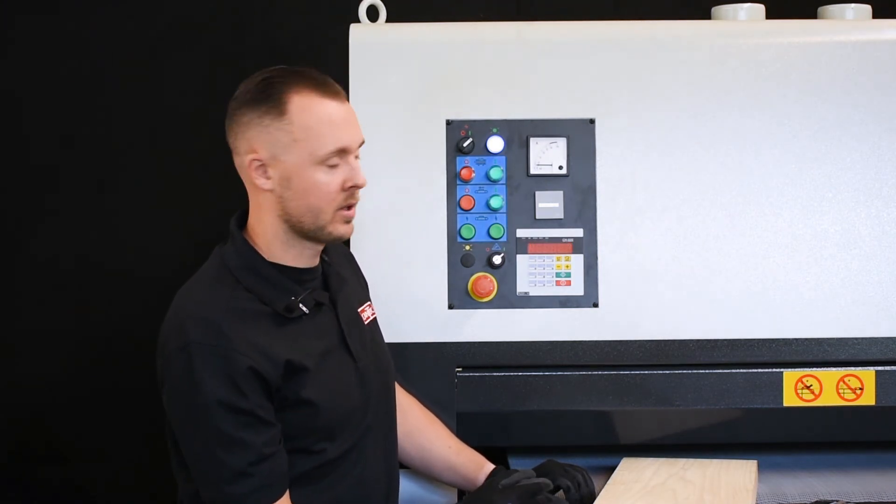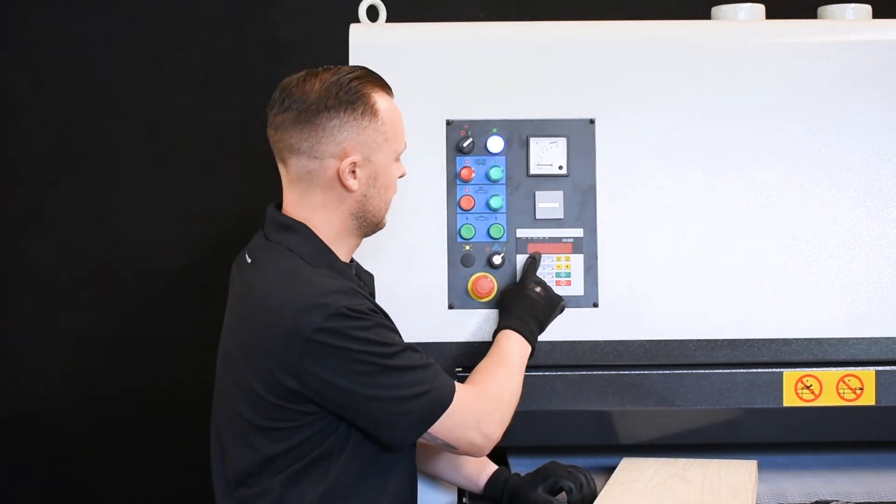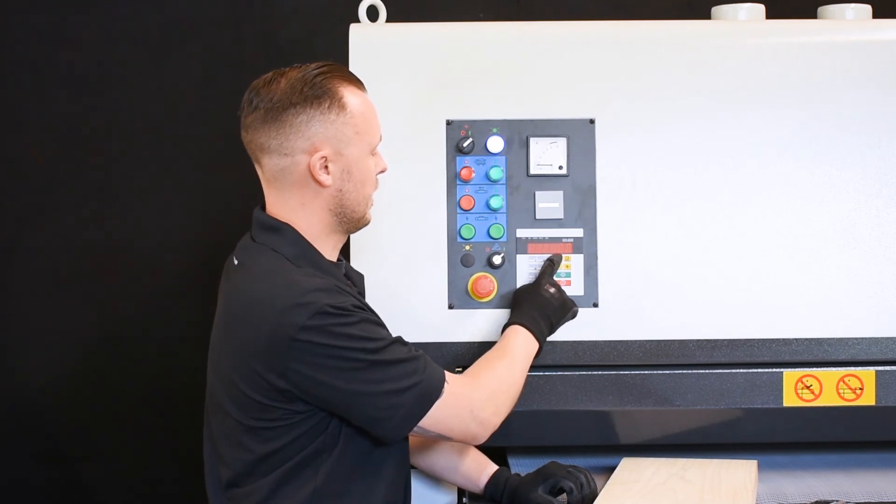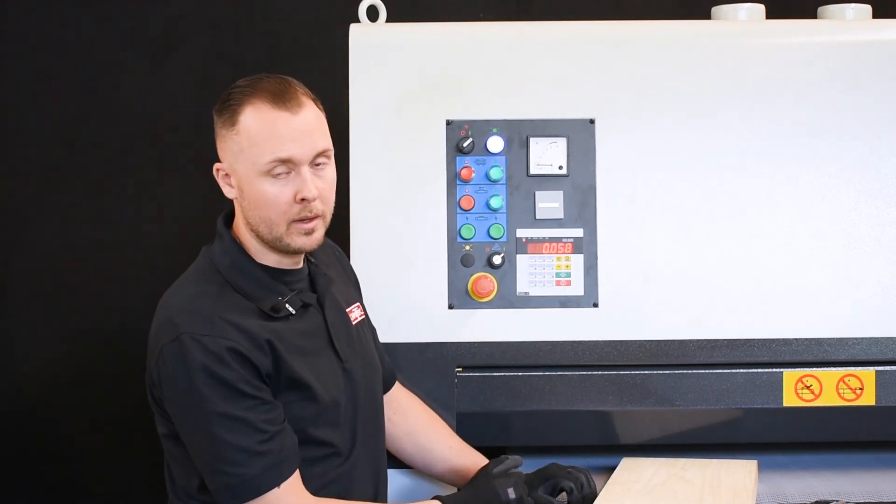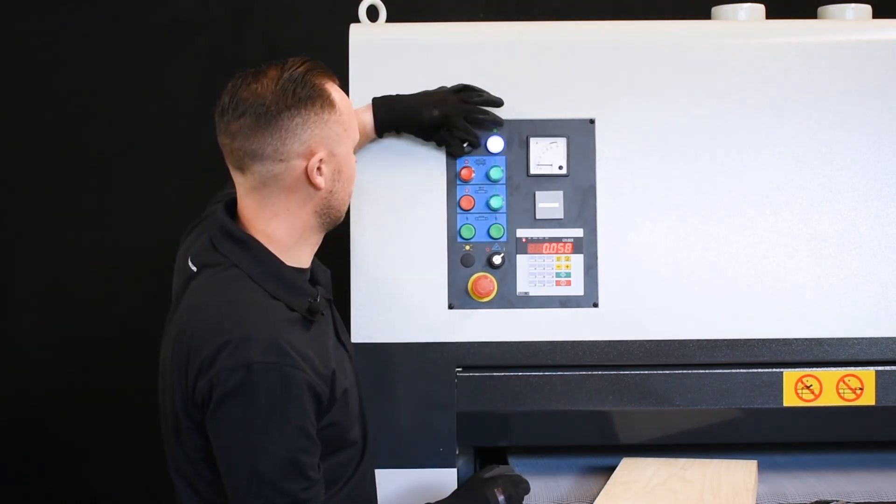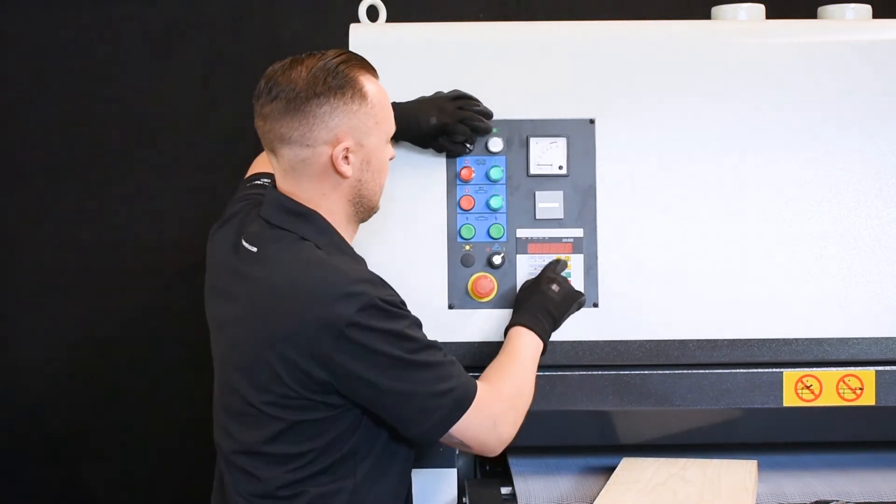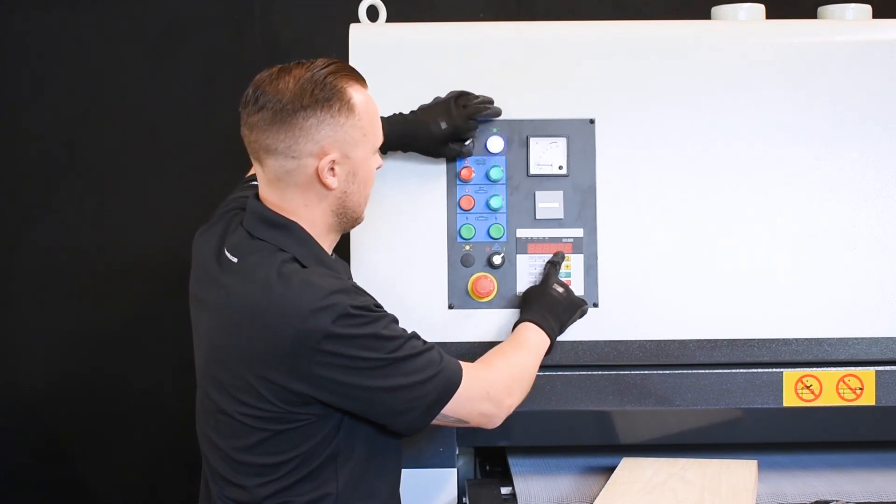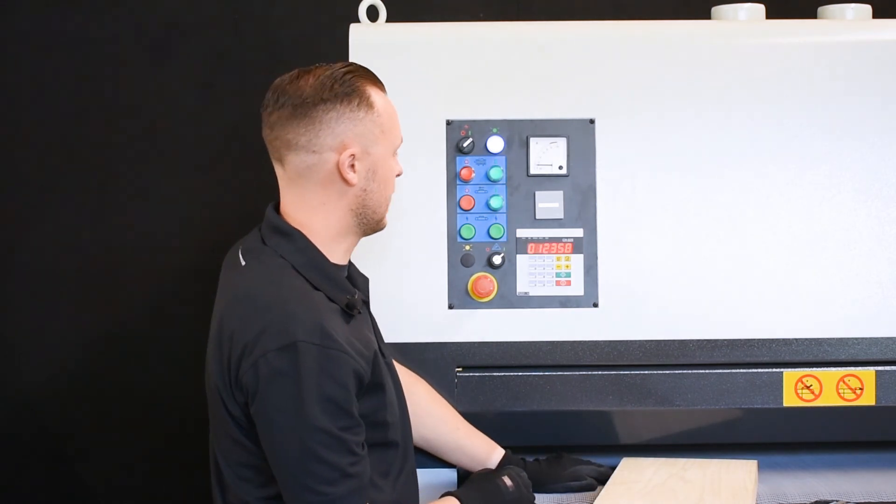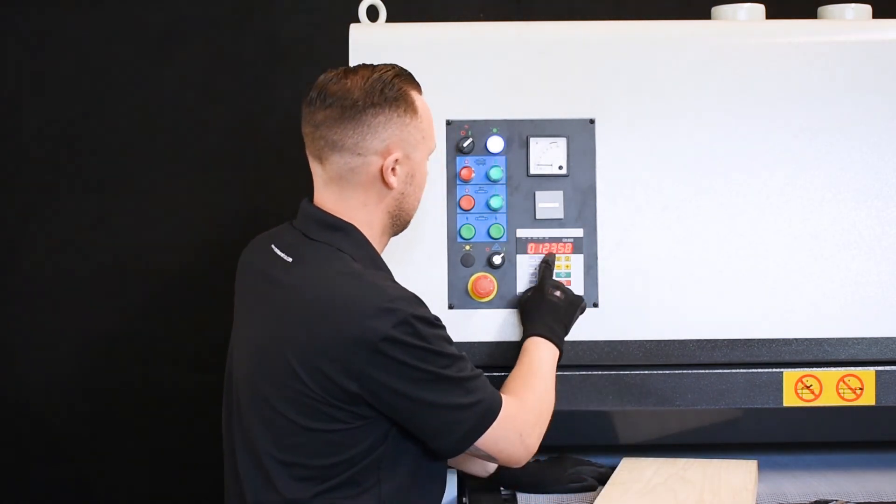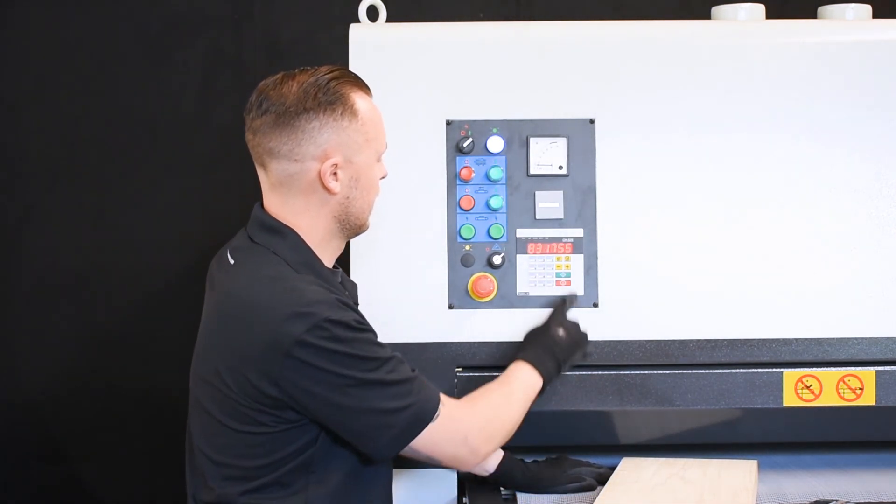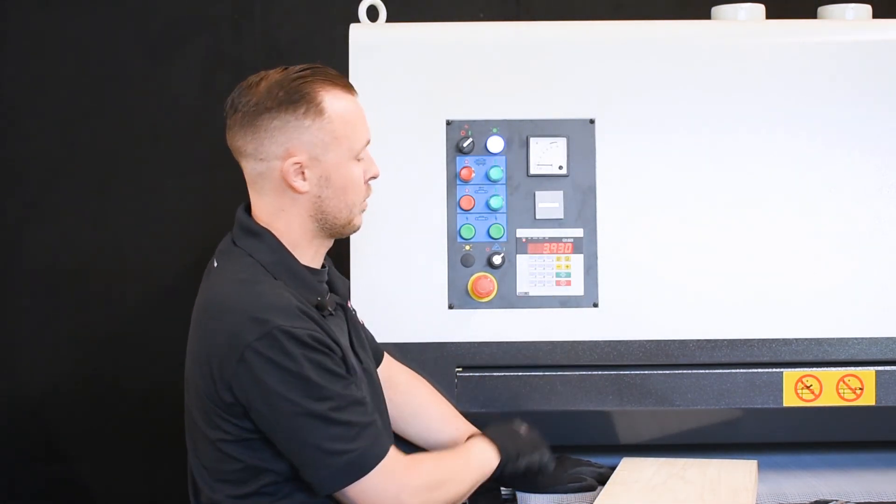Simply to change the resolution number you key it in and press set. If you need to change it again you go through the same process, press and hold set, you turn back on the control power and key in the new resolution value and press set to confirm.